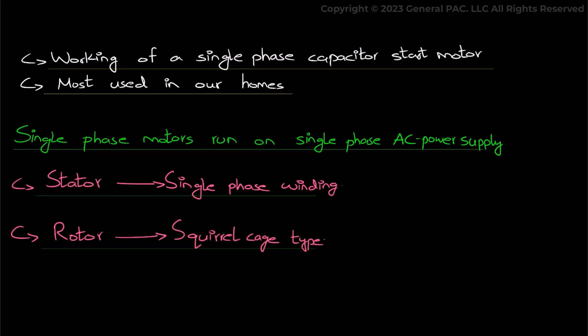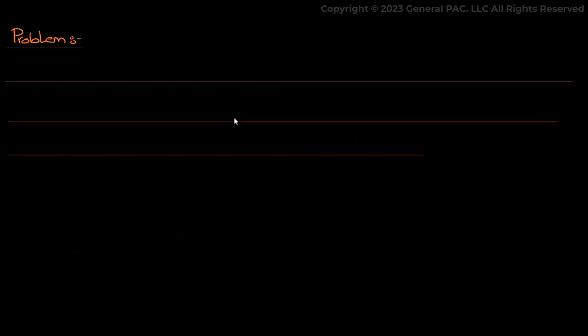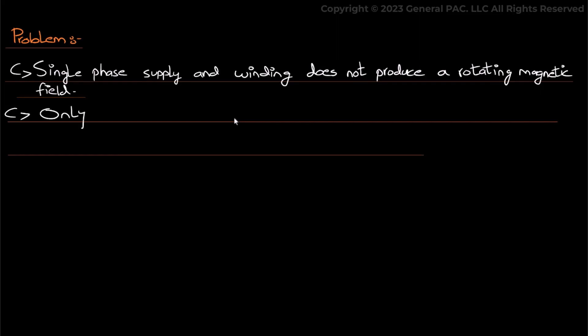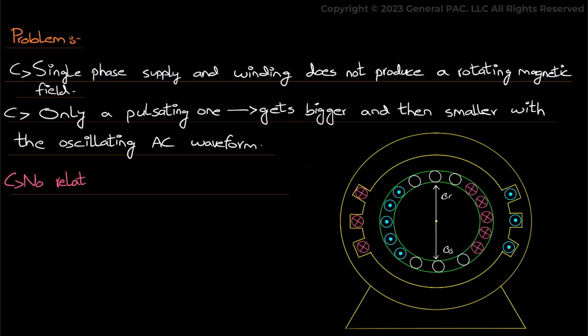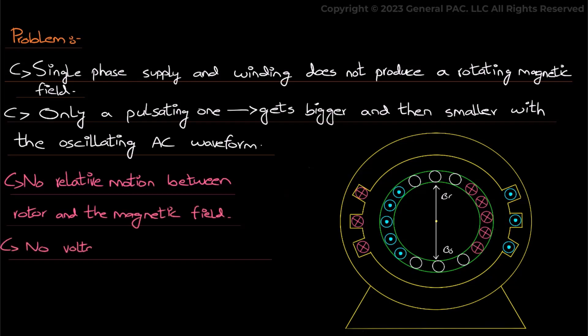Unfortunately, with this single phase motor there exists a problem that this is a single phase supply and the winding does not produce a rotating magnetic field. Instead, it produces only a pulsating field which has alternating highs and lows with oscillating AC waveforms. This means that there is no relative motion between the rotor and the magnetic field and hence no voltage or current will be produced.